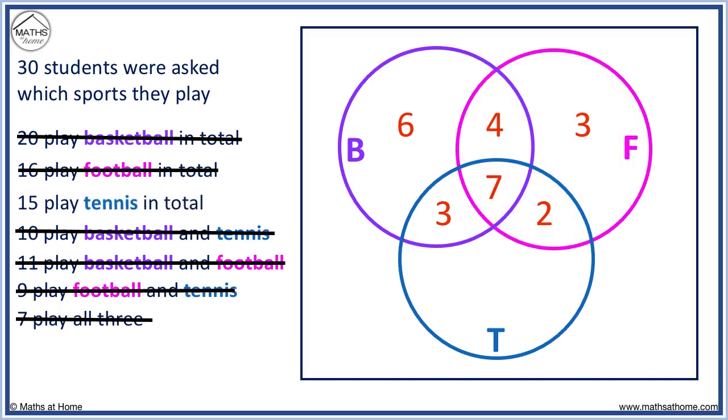15 play tennis. 3 plus 7 plus 2 equals 12. We need 3 more to make 15. Finally, we know that 30 students were asked in total. All of our numbers must add to 30 in total.